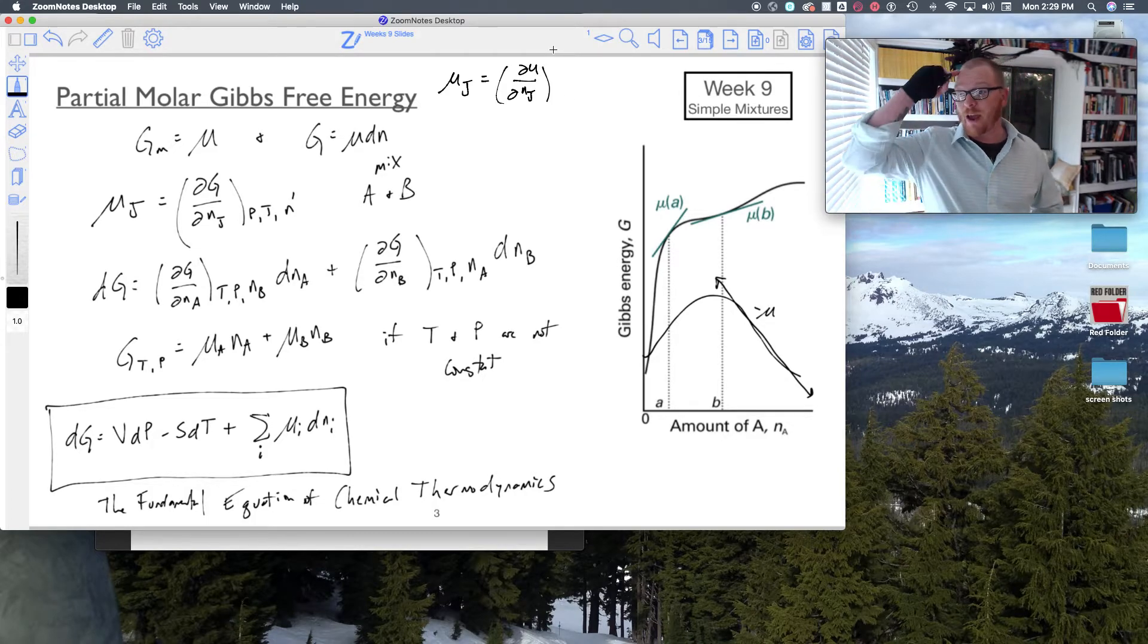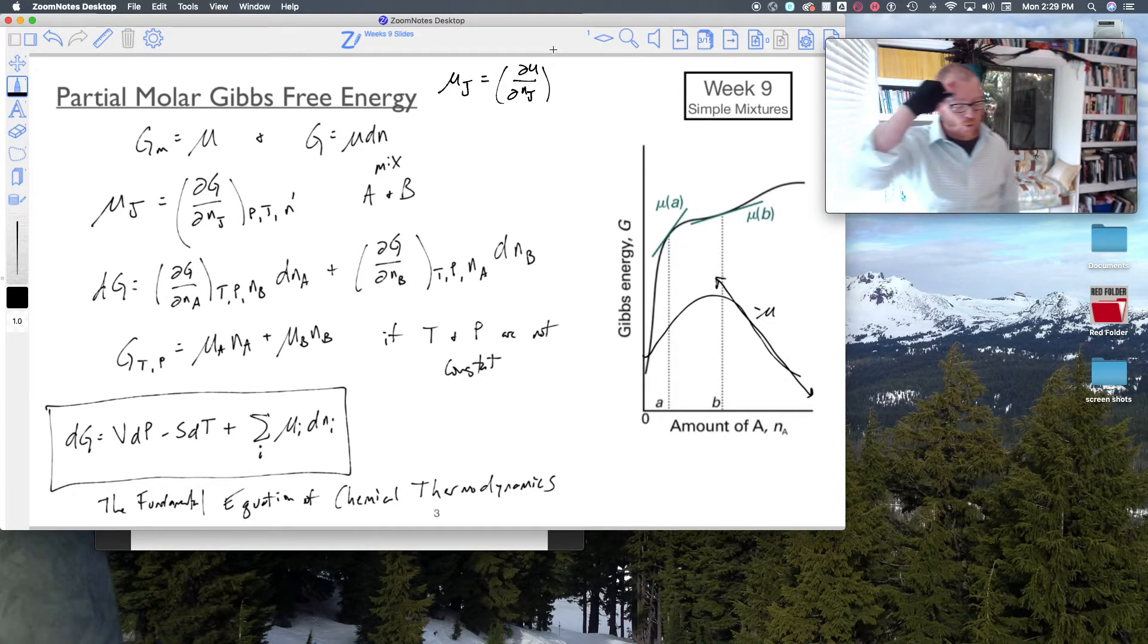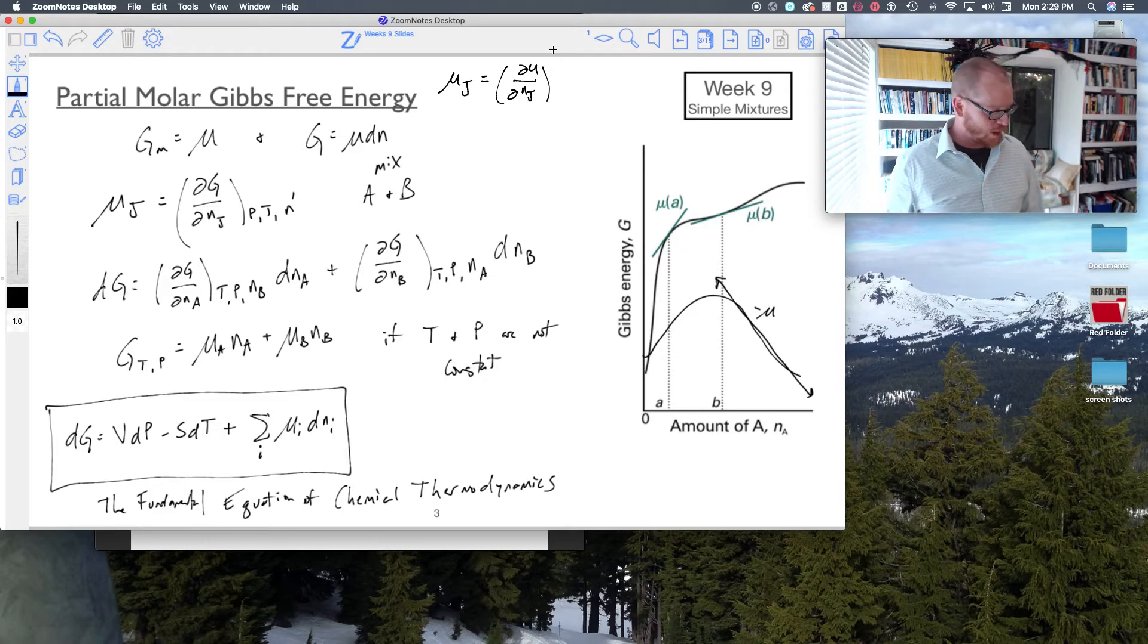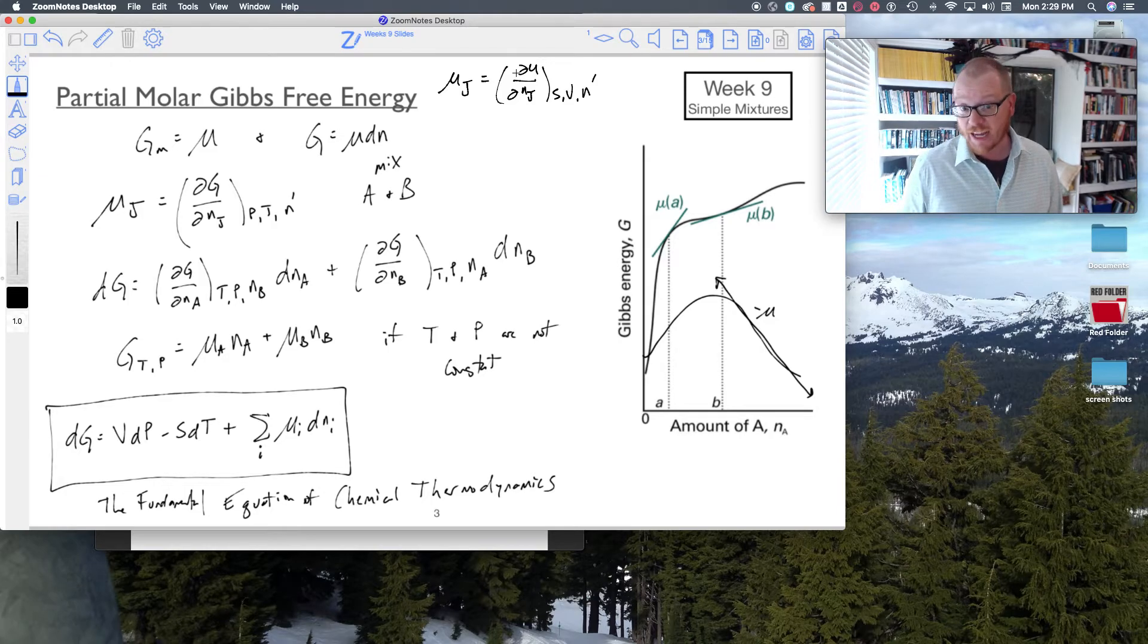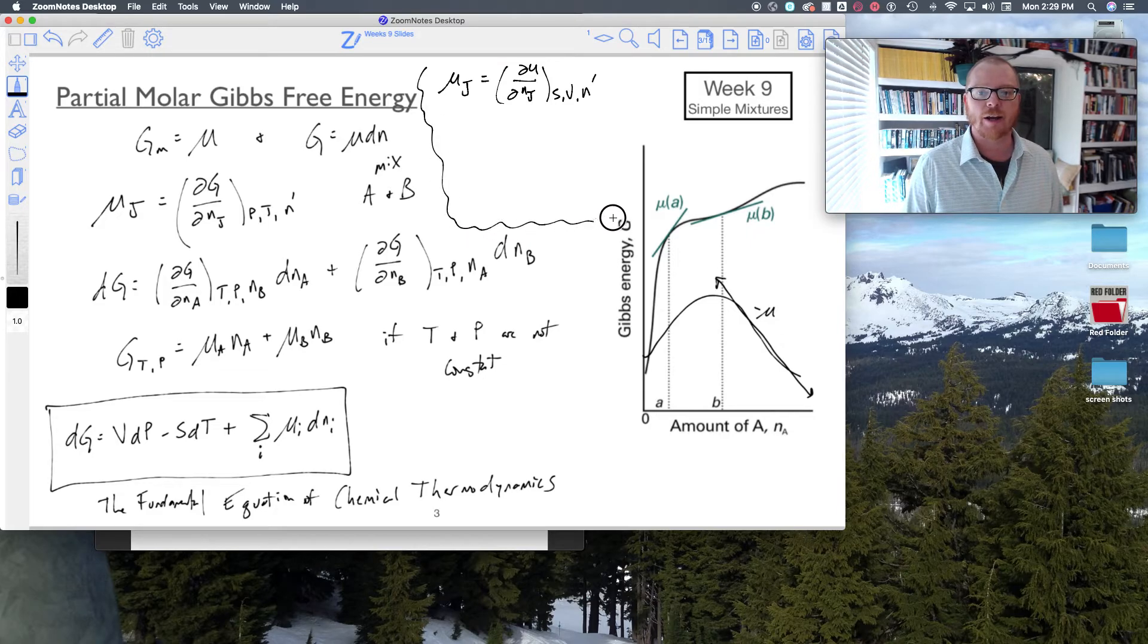And because this is U, we have to quickly think about our thermosquare, that UG ship. We remember that U would be sandwiched between S and V. So if S and V are being held constant, my chemical potential is related to internal energy. So let me kind of box this off right here.